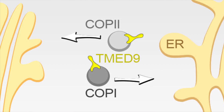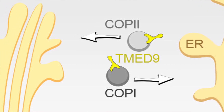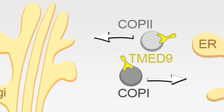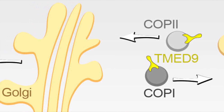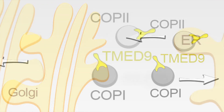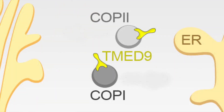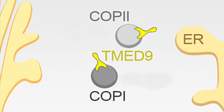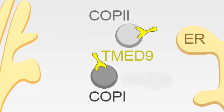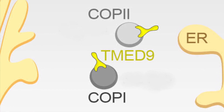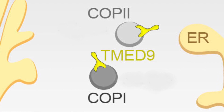What we have found out is that the mutant frameshift MUC1 protein is being trapped in the early secretory pathway, in between the endoplasmic reticulum and the Golgi. The protein is being found inside vesicles — COPI vesicles — together with the cargo receptor TMED9, and there it is being accumulated.